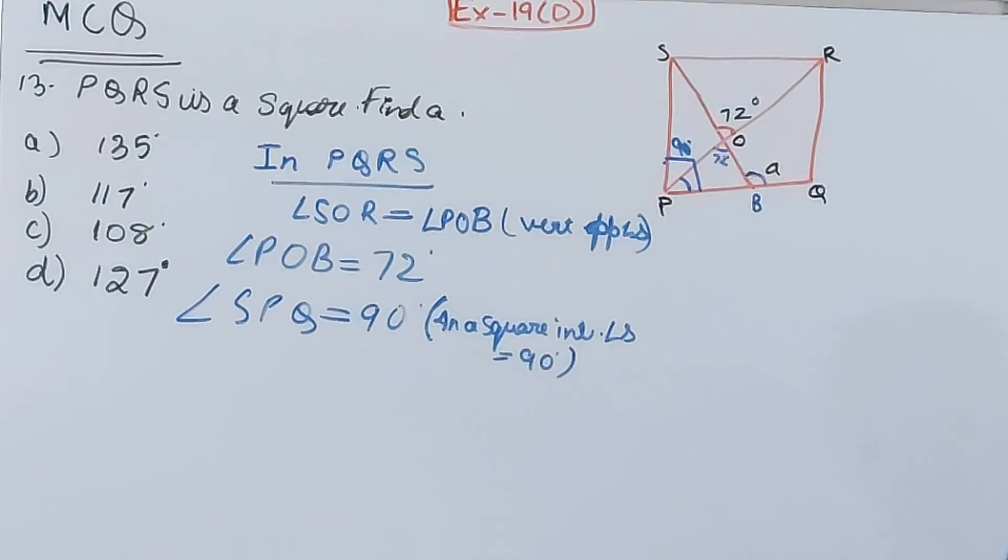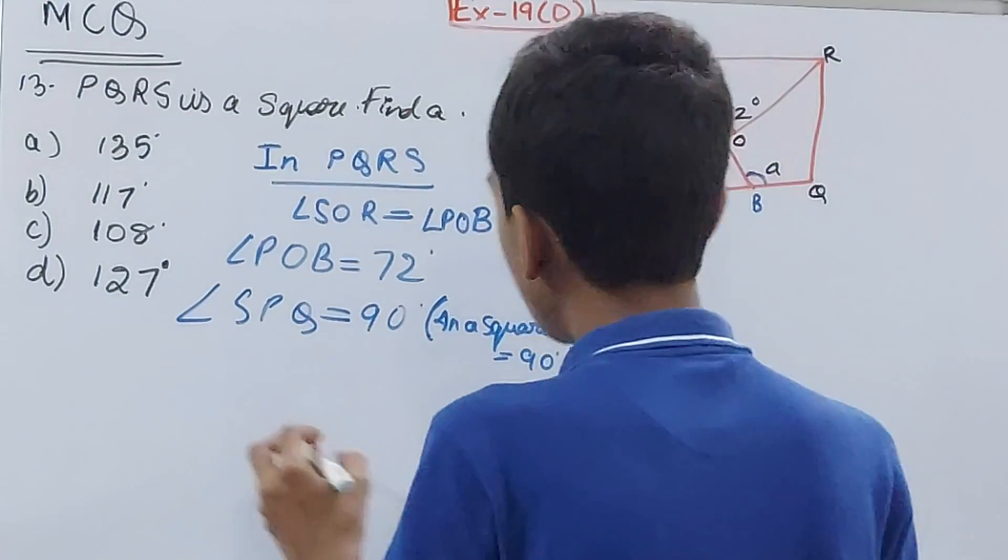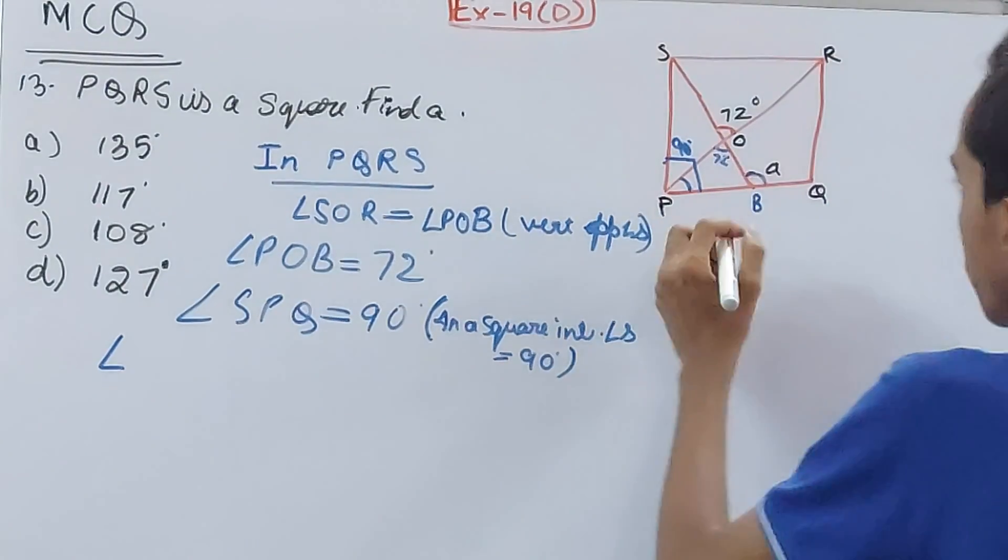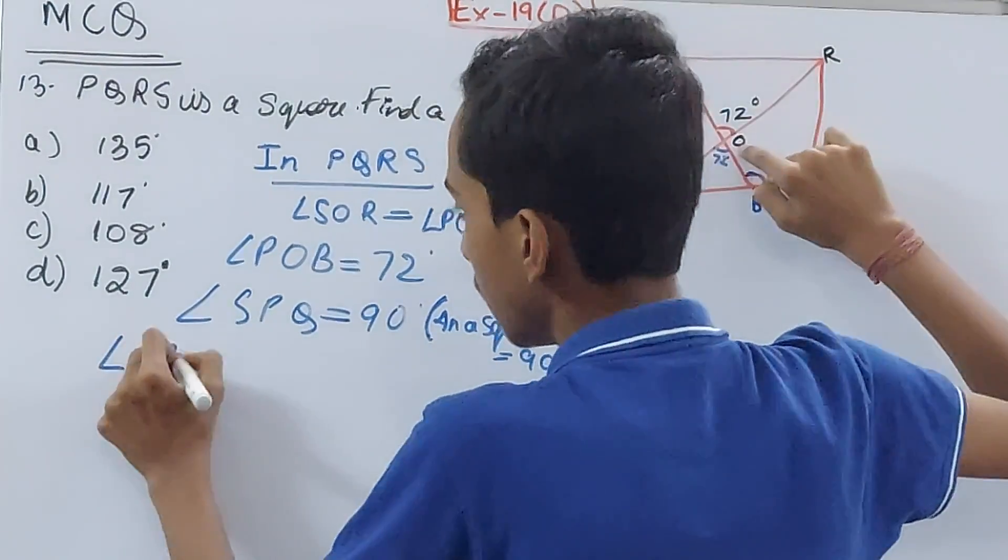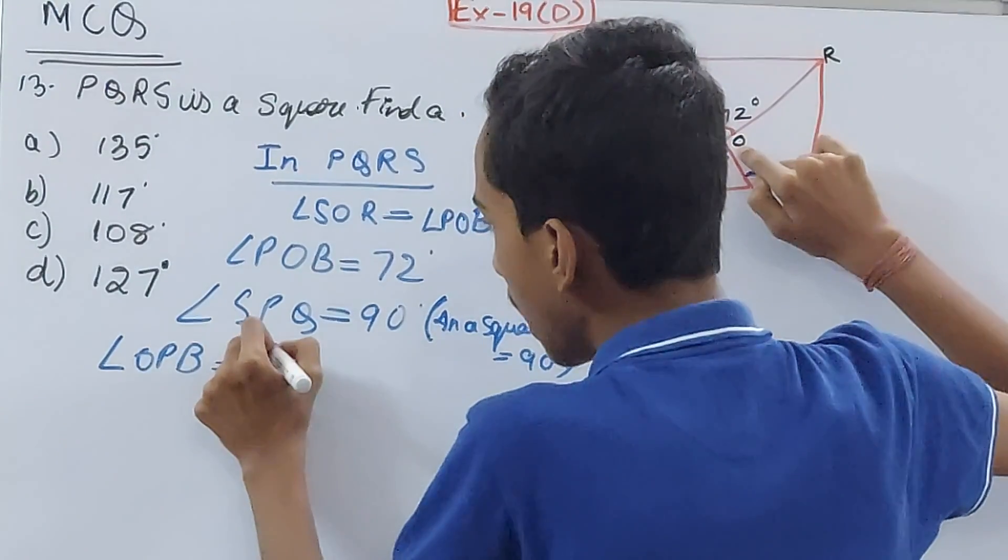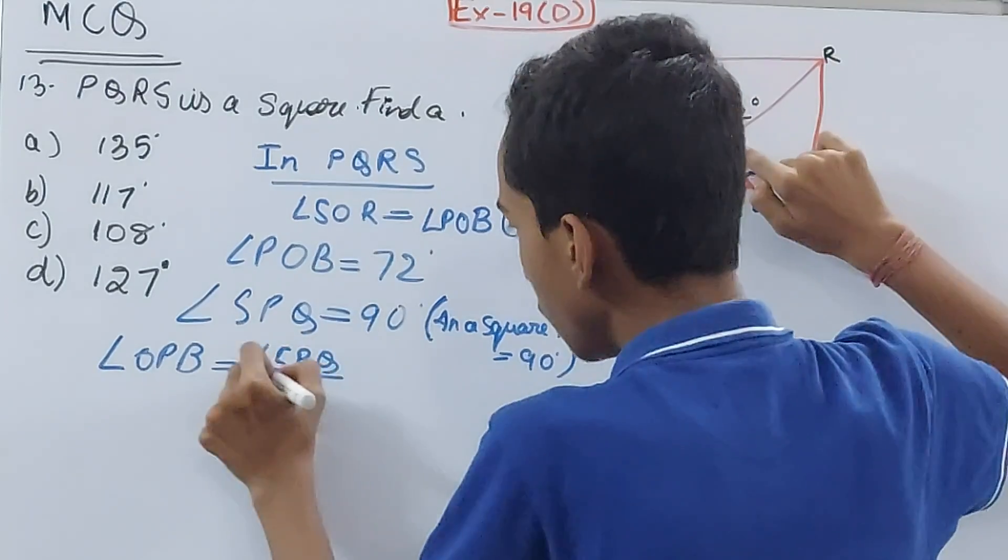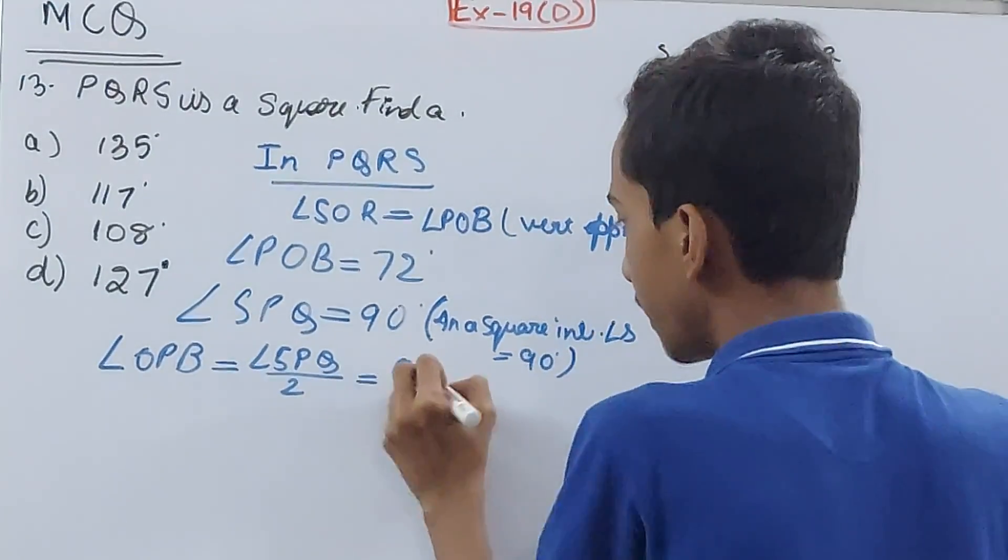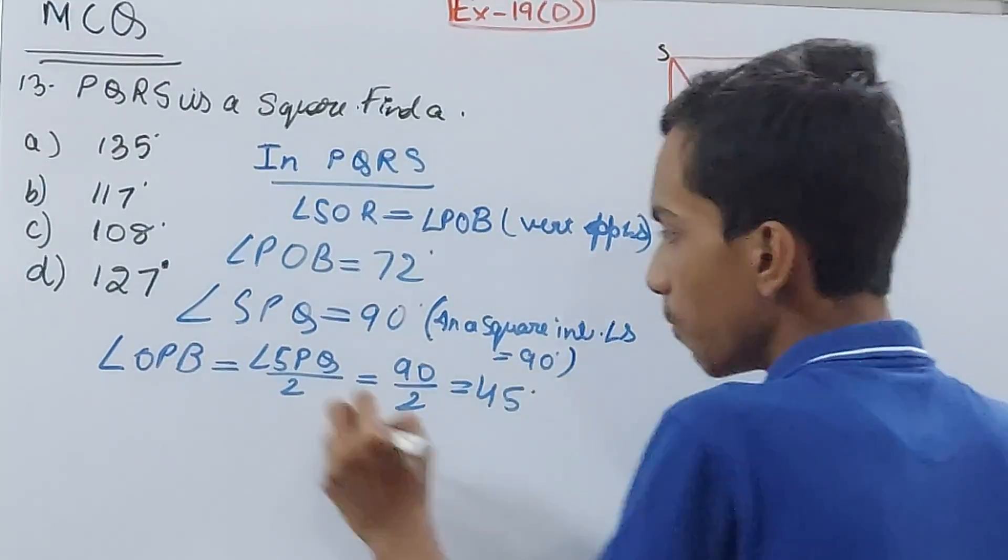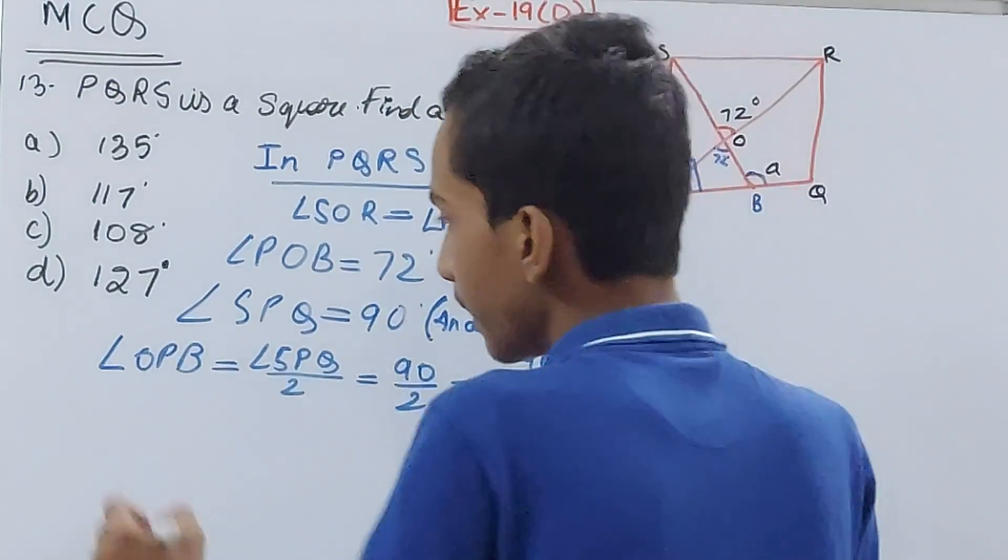So SPQ is 90 degrees. And now how comes the real part, pay attention. Angle OPB will be equal to half of angle SPQ. Why? First of all, let's calculate 90 by 2. That means 45 degrees. Why is OPB equal to half of SPQ?